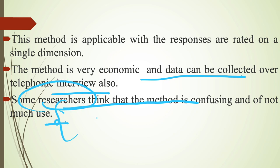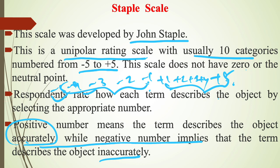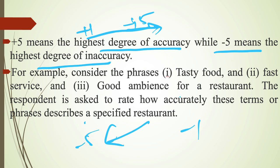So this is all about the Staple Scale. I will again summarize all the points so that you can easily understand about this topic. So what is the Staple Scale? It is developed by John Staple. It is a unipolar rating scale. It has usually 10 categories from minus 5 to plus 5. Positive number denotes object accuracy and negative number denotes object's inaccuracy. Whereas plus 5 denotes the highest degree of accuracy and minus 5 denotes the highest degree of inaccuracy.